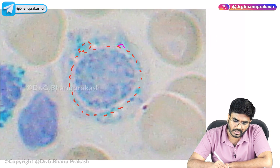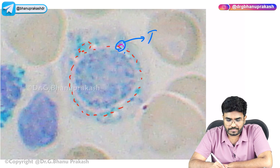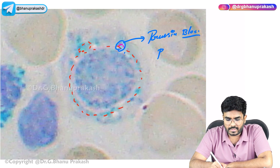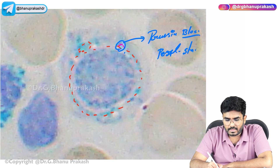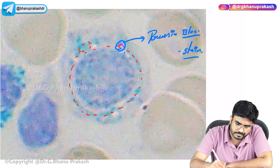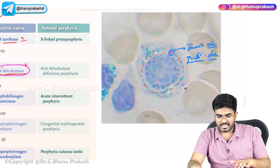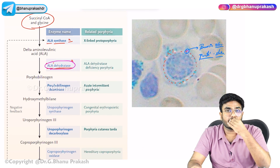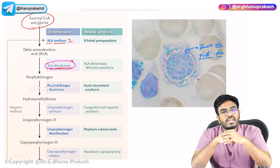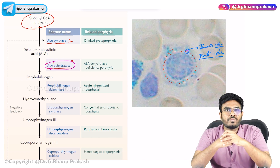The stain used to visualize iron in ringed sideroblasts is Prussian blue (also called Pearl stain). With this, we have covered anemia of chronic disease and sideroblastic anemia. In the next video, we'll discuss thalassemia — the remaining microcytic anemia. Hope the video was helpful. Thank you.